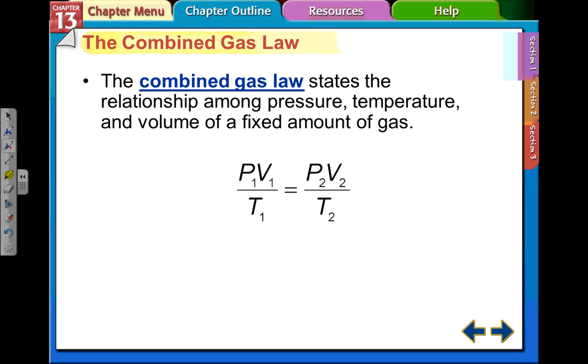The combined gas law combines all three of these gas laws we've talked about: Charles, Boyles, and Gay-Lussac's law. We all combine those into one law, one combined gas law where we have the pressure, volume, and temperature. The product of pressure and the volume divided by the temperature in Kelvin is going to be a constant number. So we can set that equal to the new pressures, new volumes, new temperatures. And all of these fractions should be the same all the time.